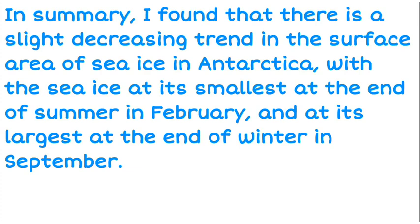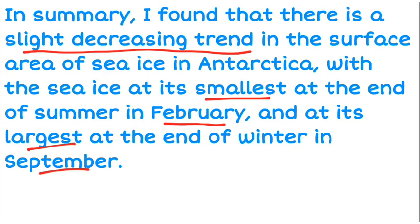So in Antarctica, we want to first of all write a quick summary about what we found in the analysis. We found that there was a slightly decreasing trend in the surface area of sea ice, and it was at its smallest at the end of February and at its largest in September. So I'm just going to write a very quick summary in context about what the trend was and what the seasonality was.